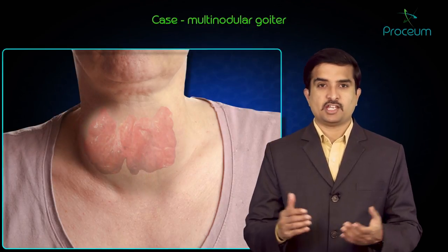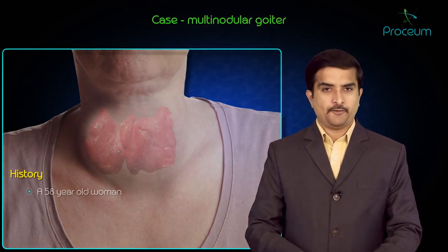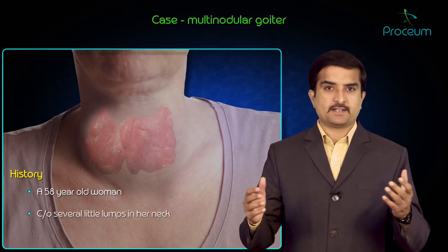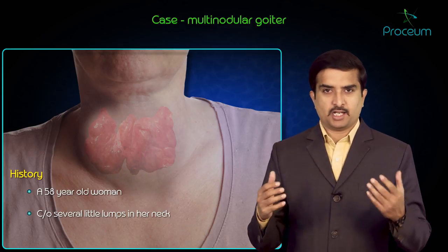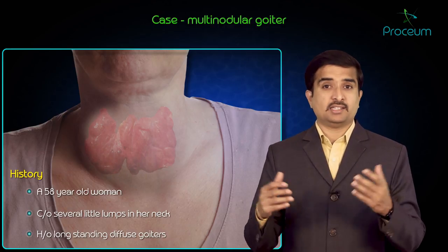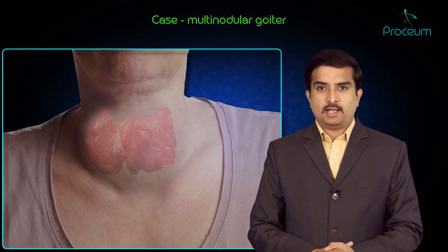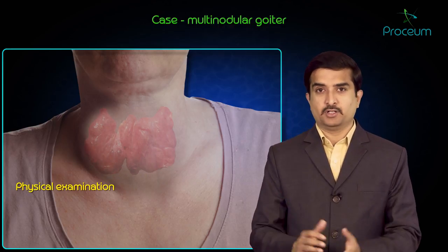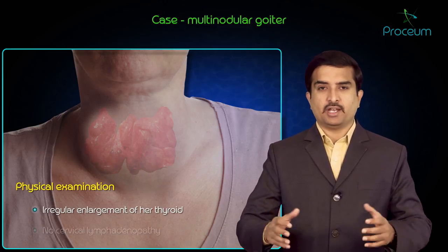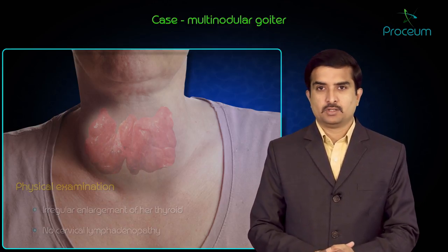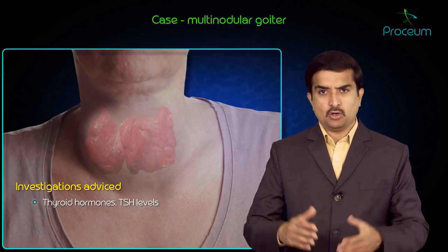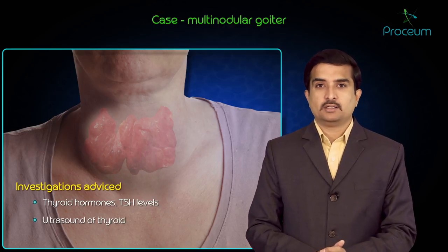Let us begin this session with a case presentation. A 58-year-old woman presents to her office complaining of several little lumps in her neck. She has a history of long-standing diffuse goiter, but her history is otherwise unremarkable. Physical examination is significant for irregular enlargement of her thyroid, and there is no cervical lymphadenopathy. You decide to check her thyroid hormone and TSH levels and order an ultrasound of the thyroid.